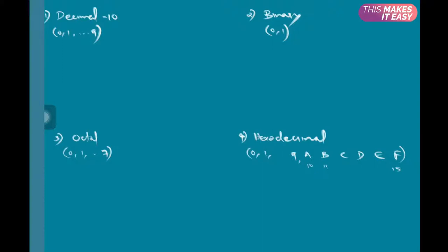Take the number 231. We know from the extreme right: this is the ones place, this is tens, this is hundreds. Ones can be written as powers of 10: 10 raised to 0, 10 raised to 1, 10 raised to 2.